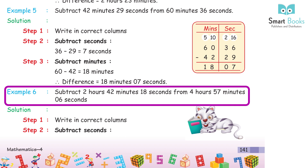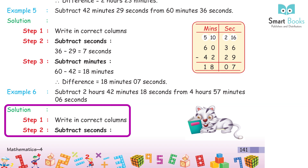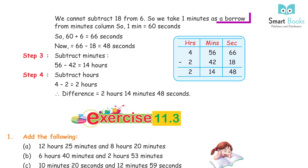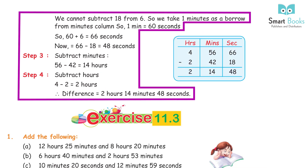Example 6: Subtract 2 hours 42 minutes 18 seconds from 4 hours 57 minutes 6 seconds. Step 2: Subtract seconds — we cannot subtract 18 from 6, so borrow 1 minute from the minutes column. 1 minute = 60 seconds; 60 + 6 = 66 seconds. 66 − 18 = 48 seconds. Step 3: Subtract minutes — 56 − 42 = 14 minutes. Step 4: Subtract hours — 4 − 2 = 2 hours. Difference = 2 hours 14 minutes 48 seconds.